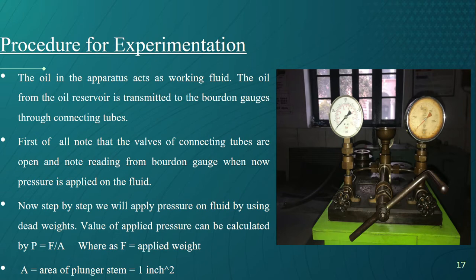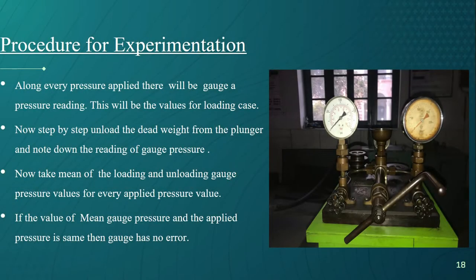Value of applied pressure can be calculated by pressure equals force divided by area, whereas force is applied weight and value of A will be the area of plunger stem, that is one inch per square. For every pressure applied there will be gauge pressure reading. This will be the values for loading case.